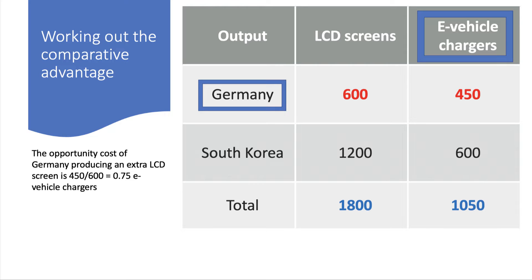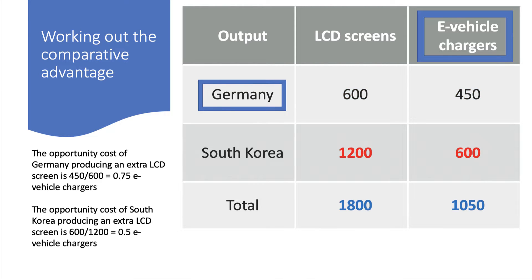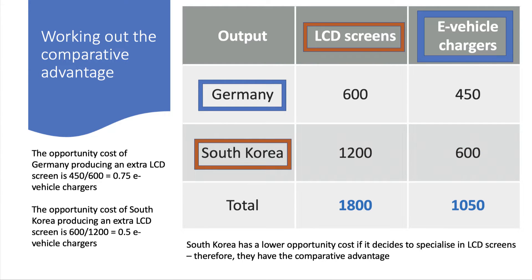Let's look at it the other way: the opportunity cost for Germany of increasing LCD screens. If they give up 450 vehicle chargers they get 600 LCD screens, so they're giving up 0.75 vehicle chargers per LCD screen. Whereas for South Korea, they only have to give up half an e-vehicle charger to get an extra LCD screen. Therefore, the opportunity cost is lower for South Korea if they choose to produce LCD screens, and therefore South Korea has the comparative advantage in LCD screens.